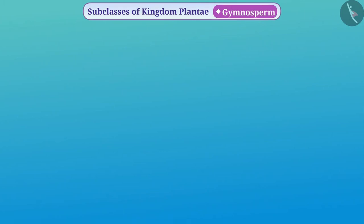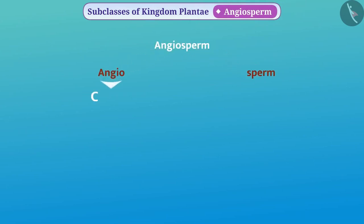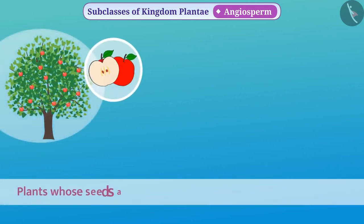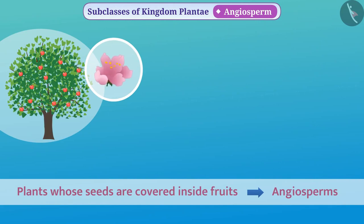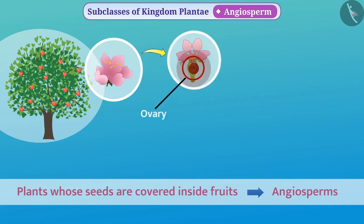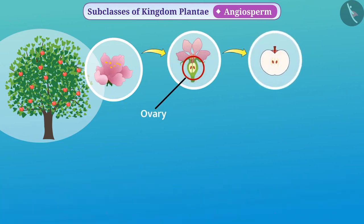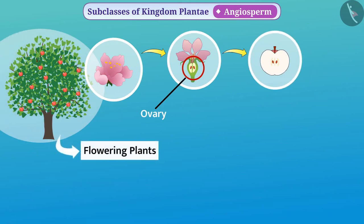Now let's understand angiosperms. The word angiosperm is made up of two Greek words: angio meaning covered, and sperm meaning seed. Plants whose seeds are covered inside fruits are called angiosperms. The main feature of these plants is the presence of flowers. Their seeds develop in the ovaries of flowers, which later take the form of fruits. Hence we also call these plants flowering plants.